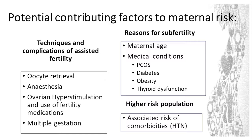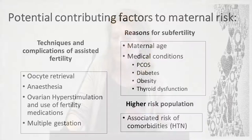Why are they so high risk? What is it about this population that makes them more likely for these potential complications? There are all the associated complications of the techniques — like retrieval of eggs, anaesthesia, ovarian hyperstimulation, multiple gestation — but what I'm going to concentrate on today is the reasons for their subfertility and how that might reflect other medical issues. Maternal age is a big factor, but their medical conditions like polycystic ovarian syndrome, diabetes, obesity, and thyroid dysfunction may be contributing. These older women with comorbidities are far more likely to have other comorbidities like hypertension that will complicate their pregnancy. So you start seeing subfertility as a proxy for a comorbid mother.